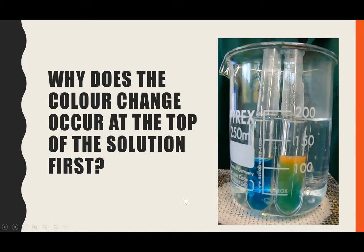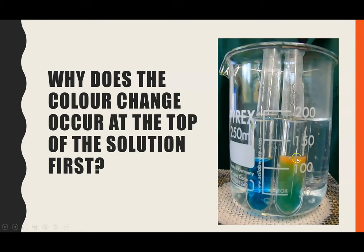You might have noticed that as the reaction was occurring, the colour changed at the top of the solution first. Here you can see the bright orange colour starting to form at the top, while it's still yellowy-green and almost blue at the bottom of the test tube. This links to physics — it's to do with convection currents. The hotter particles in the solution rise, so the hottest point is at the top. The molecules there have the most kinetic energy, leading to more successful collisions, so the reaction and colour change happen faster at the top.